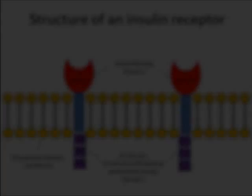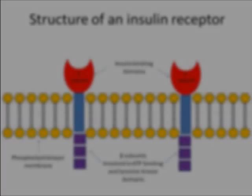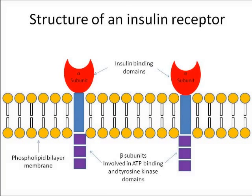Here is a diagram showing the structure of an insulin receptor. Insulin receptors are a transmembrane protein composed of two alpha subunits, which are the insulin binding domains, and two beta subunits, which are involved in ATP binding and are the tyrosine kinase domains.